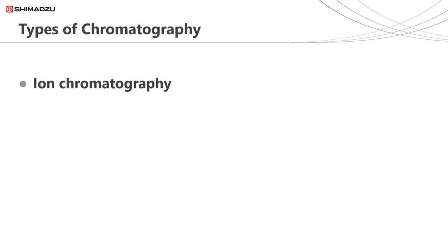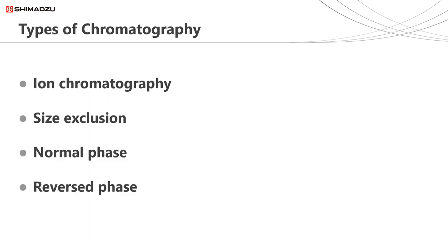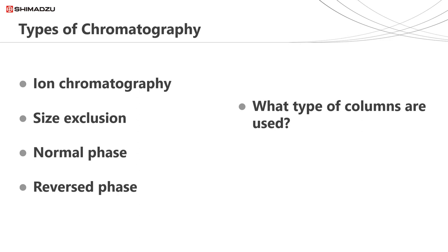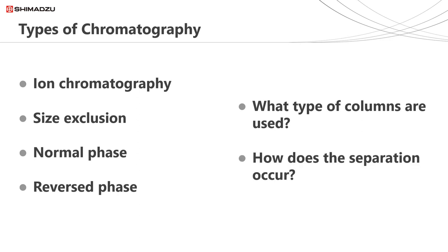The second webinar looked at the common different types of liquid chromatography. These included ion chromatography, size exclusion, normal phase and reversed phase chromatography. As part of each of these types of liquid chromatography, we looked at what types of columns are used and how the separation is achieved.